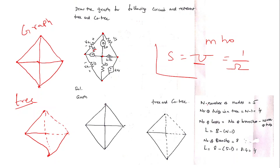Let us calculate: the number of nodes N equals 5, so the number of twigs equals n minus 1 which is 4. The number of links L equals total branches minus twigs: L = b − (n − 1) = 8 − 4 = 4. So there are a total of 4 links in this example.